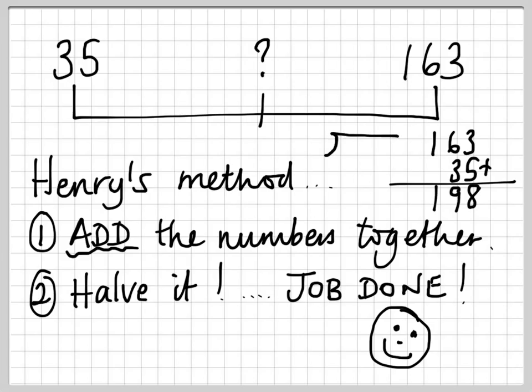And then all you've got to do is halve it. Little bus stop. Let's go for half of 198. 2s into 1 doesn't go, remainder 1. 2s into 19 goes 9, remainder 1. 2s into 18 goes 9. Halfway is 99. Job done. Much quicker. I know which method I prefer now.